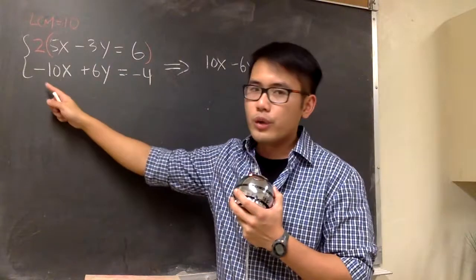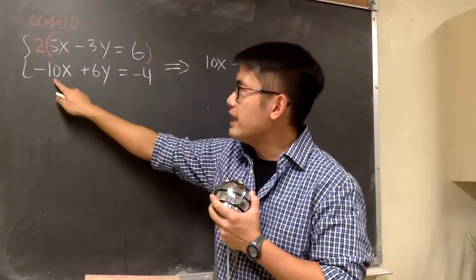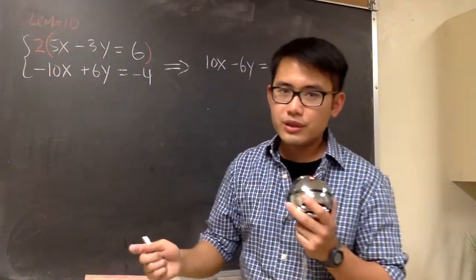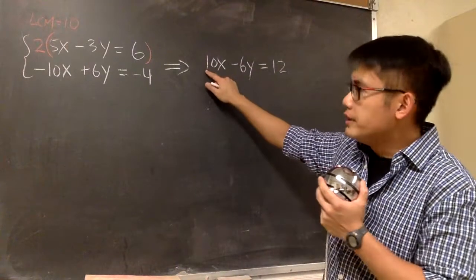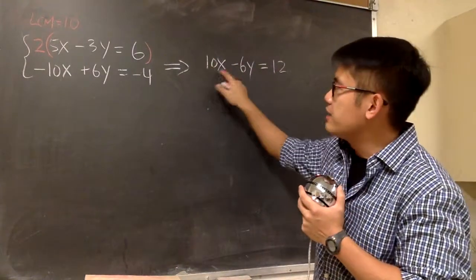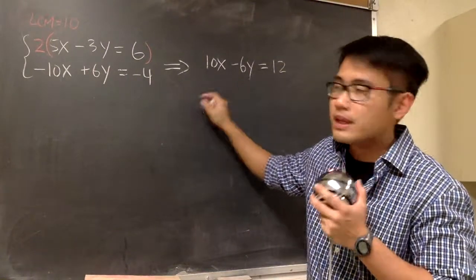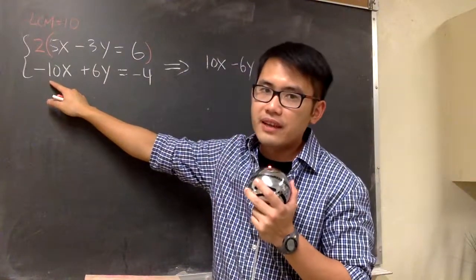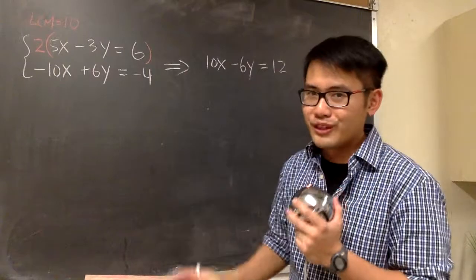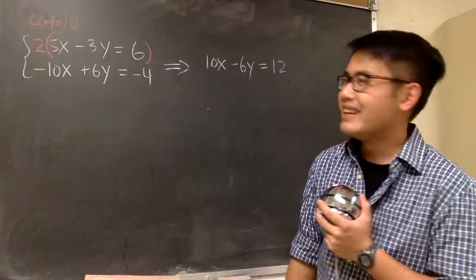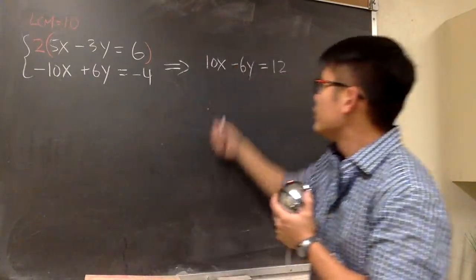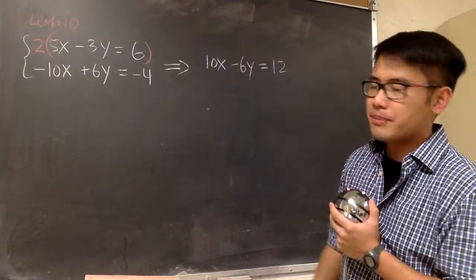And if you look at the next equation right here, we have a 10 in front of the x already, so that's good. And also, this 10x, this is the positive 10x. So we do want this right here to be a negative 10x. But this is already a negative 10x. That means we are all good. We don't need to do anything. We just have to bring this to here, line them up.